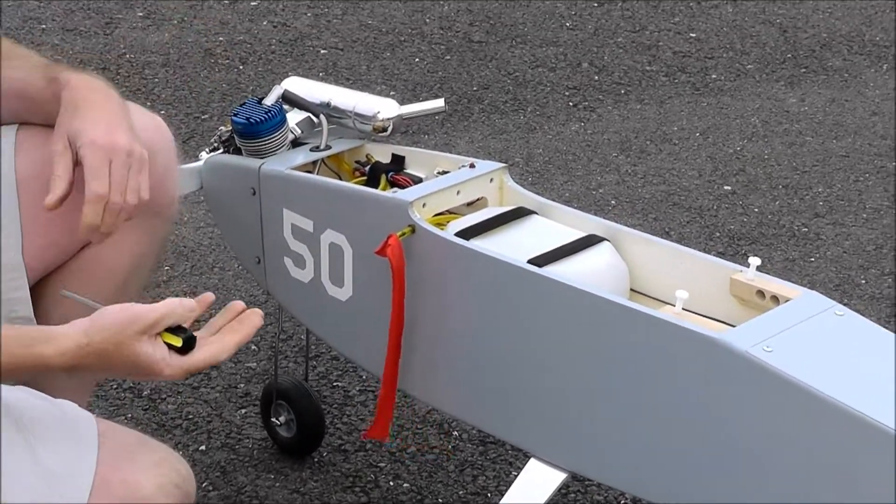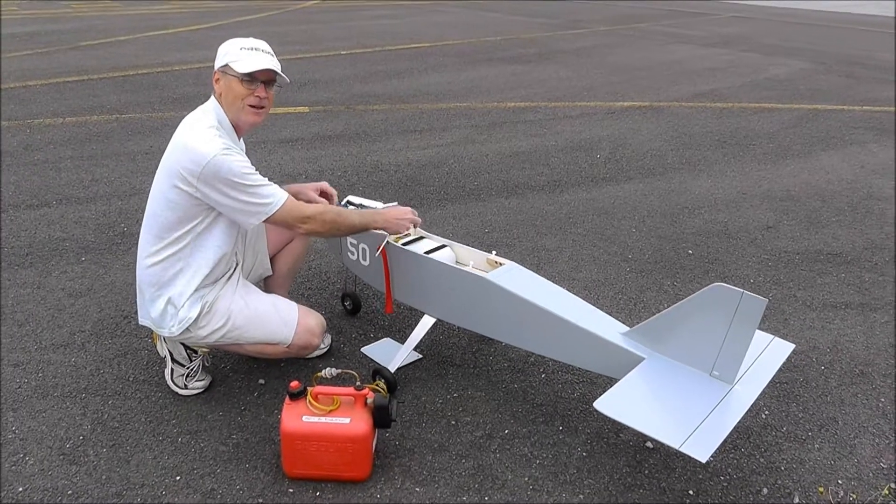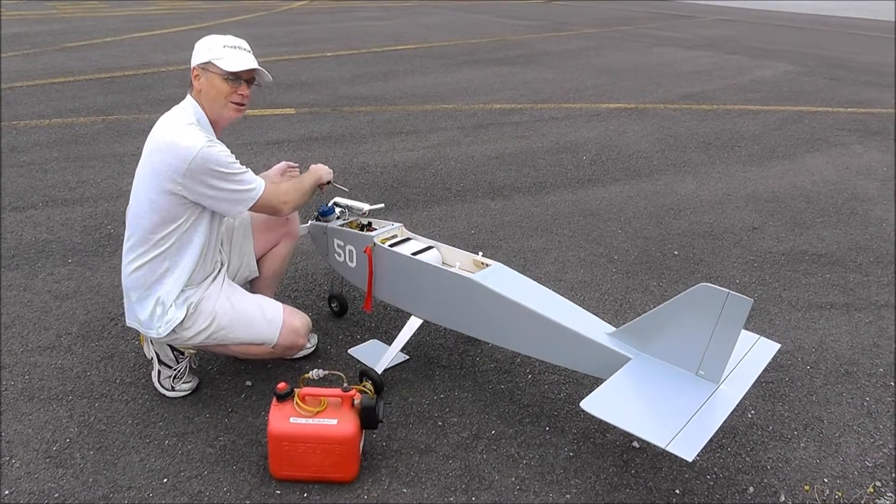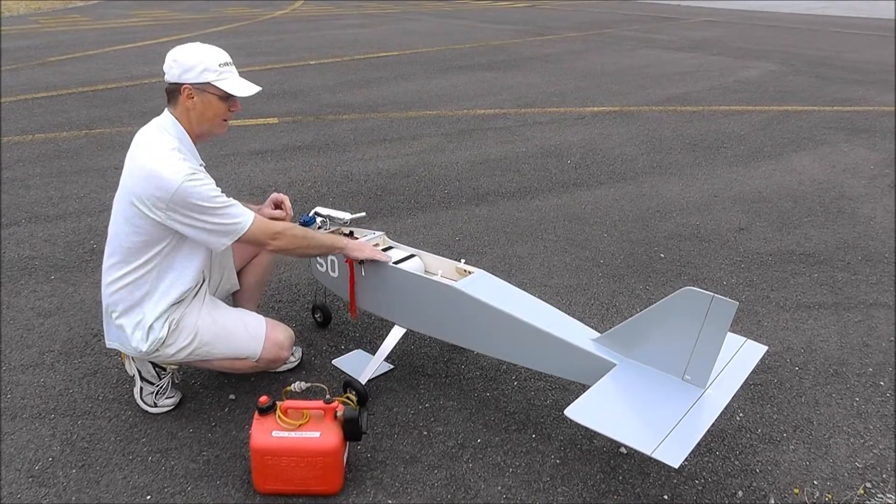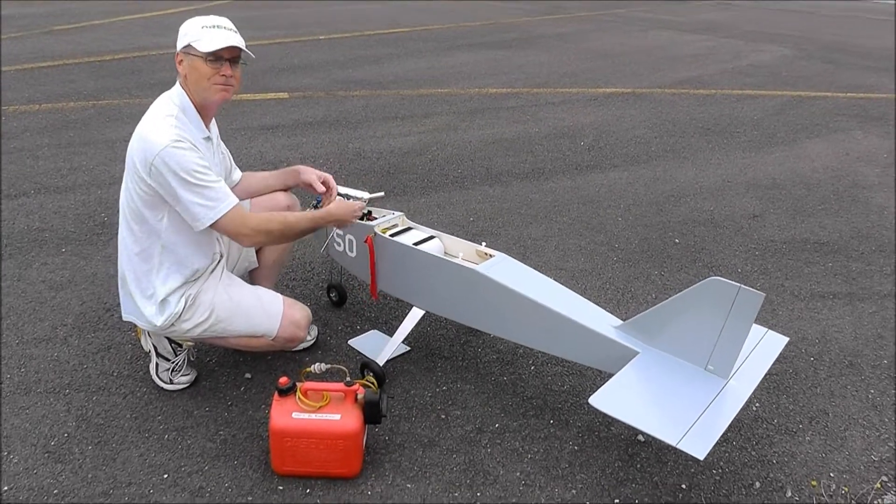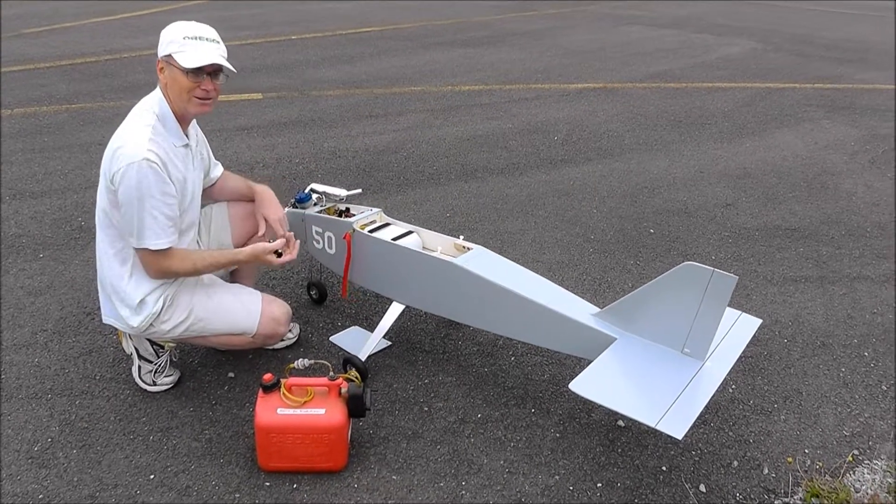They're in series, which means the large tank or the main tank feeds into the 20 ounce, which then feeds into the engine. The fuel is drawn out of this tank first. This one will empty first as the engine's running, followed by the smaller tank.